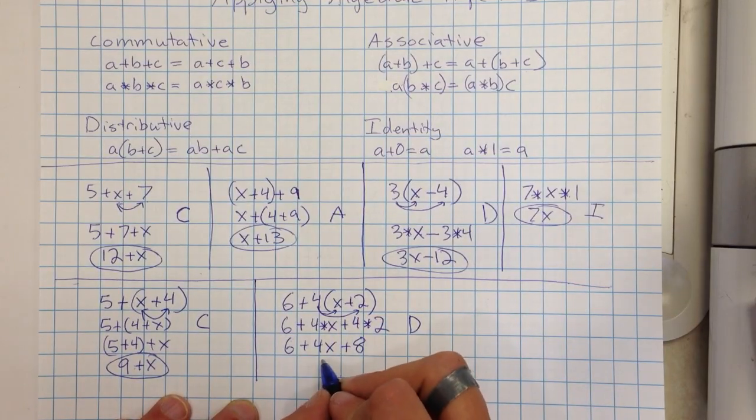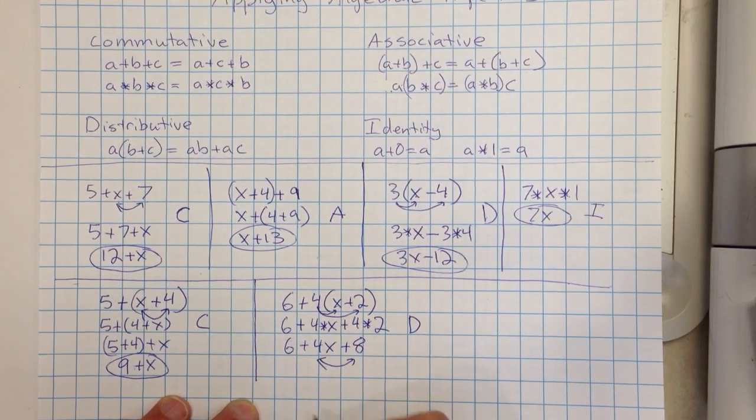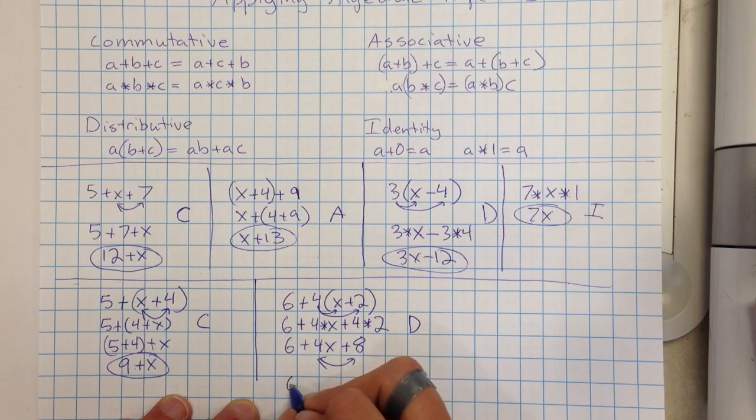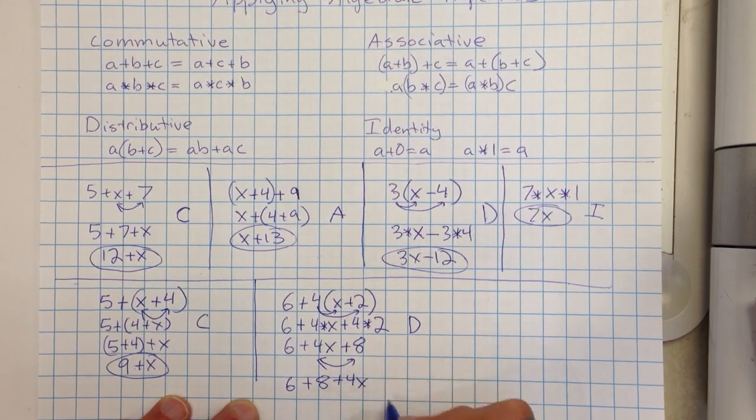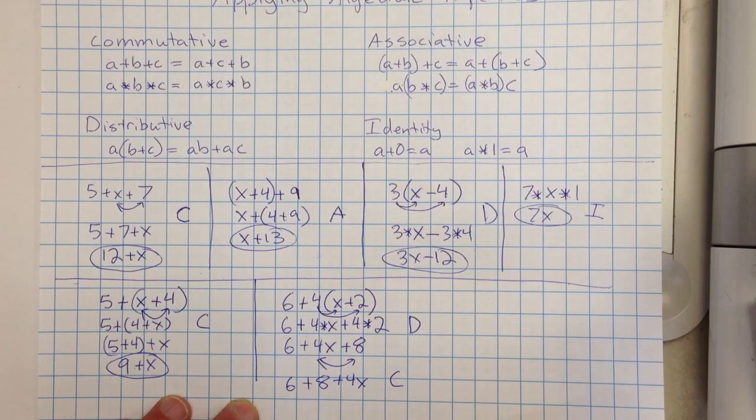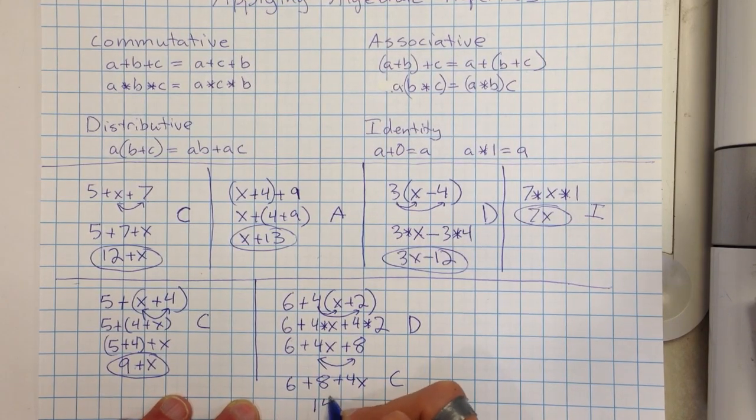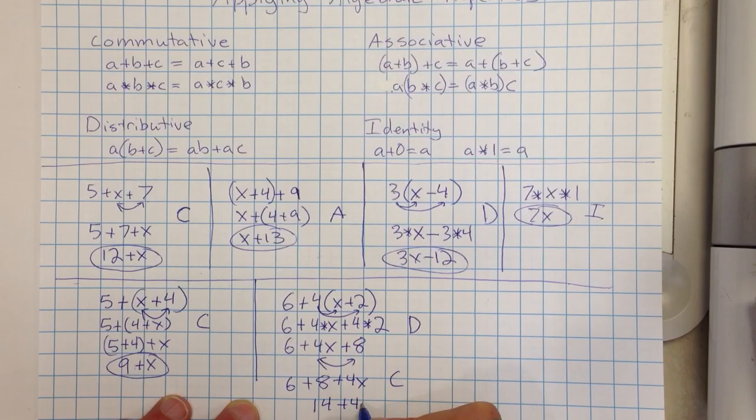But I can move these two numbers around. So I could rework this as saying 6 plus 8 plus 4X. That's a commutative property. And then now I can add this 6 and the 8. So this would give me 14 plus 4X.